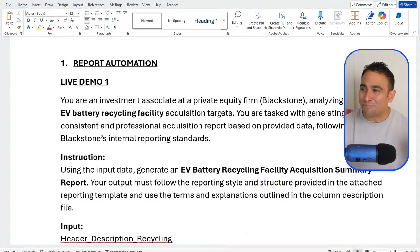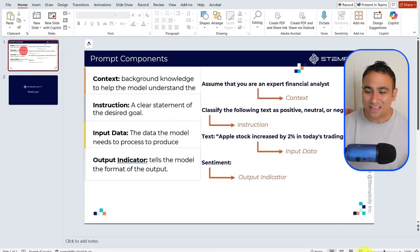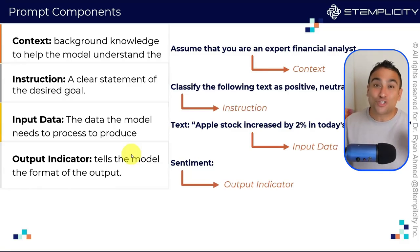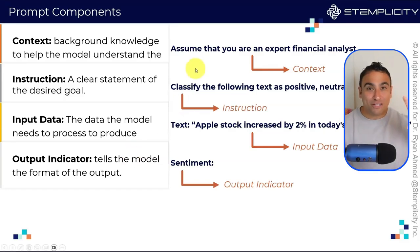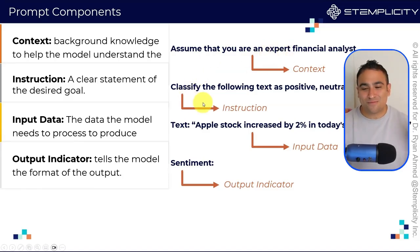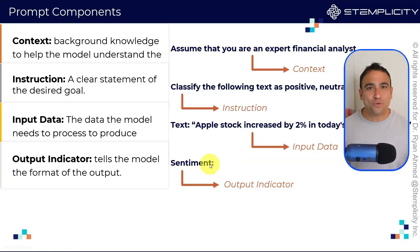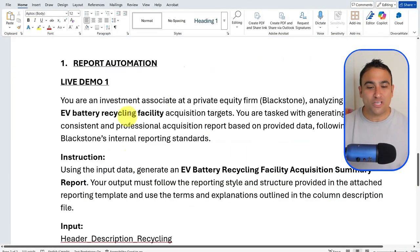You might wonder why the prompt is structured that way — this is prompt engineering 101. I included a PowerPoint slide that shows how to structure a prompt. First, give it context: 'Assume you're an expert financial analyst.' Then give clear instructions, like 'Classify the following text as positive, neutral, or negative.' Next, provide the actual input data. Finally, give an output indicator — for example, write 'Sentiment:' and leave a blank. That's exactly the strategy used to design this prompt.